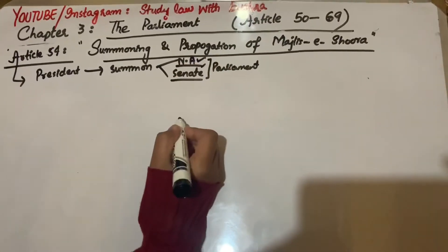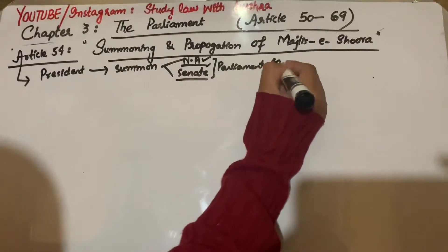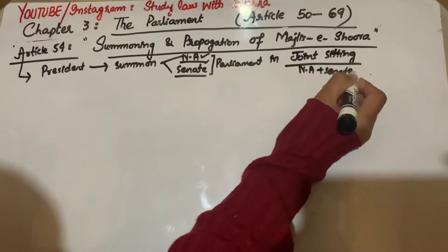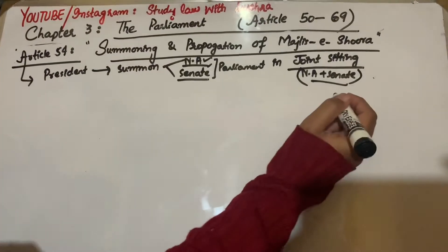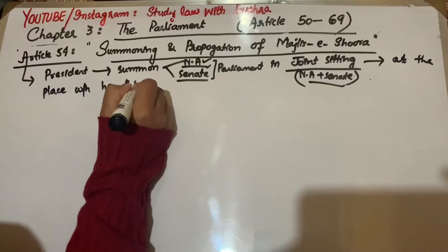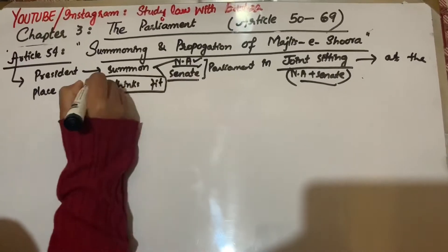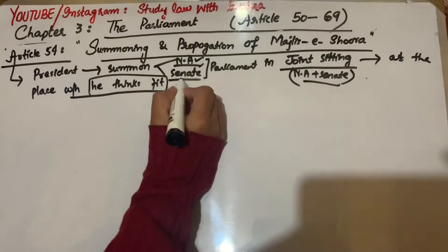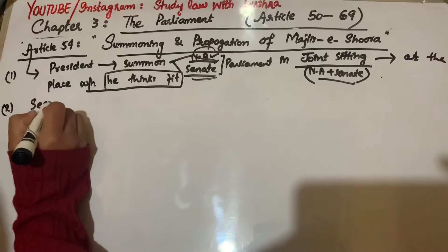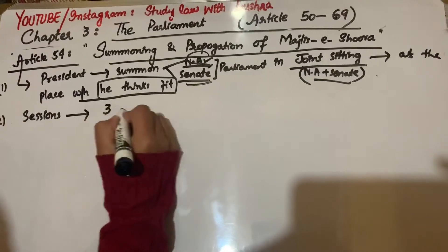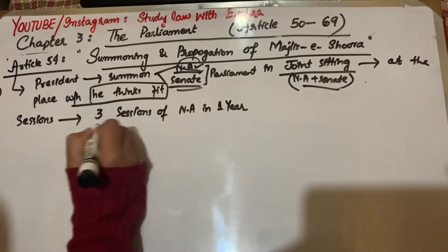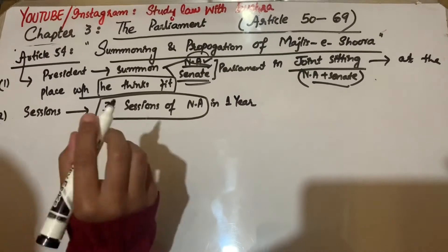The President will summon both houses or any one house, Senate or National Assembly, from time to time. He will call the meeting either in joint sitting or separately. Joint sitting means when National Assembly and Senate's meeting is called together. At the time and place which the President thinks is appropriate, he will call the Parliament's meeting.